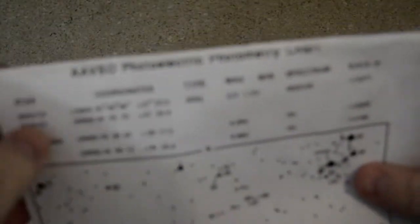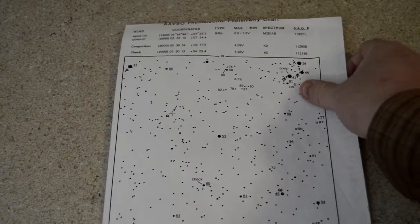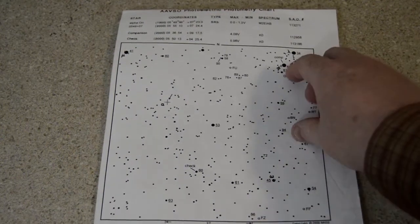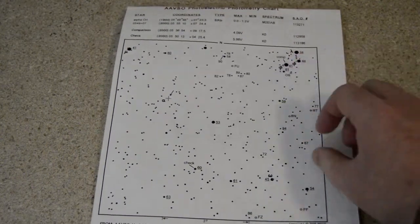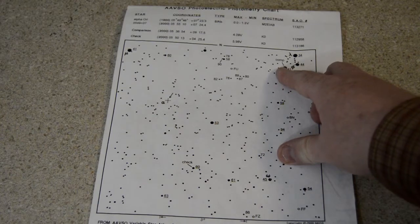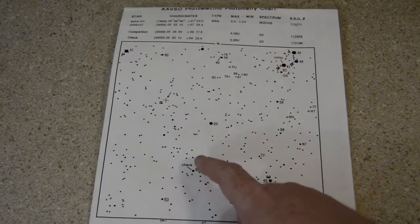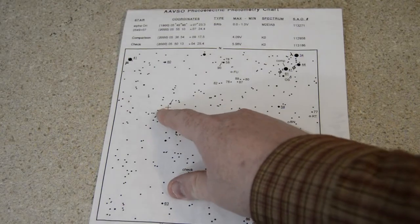Now looking inside here, here we have the official AAVSO photometry chart. So it shows that area up here. Here's the area of Orion's head. There's Kappa Orionis there. We have a check star down here. And Betelgeuse is represented by the crosshairs.